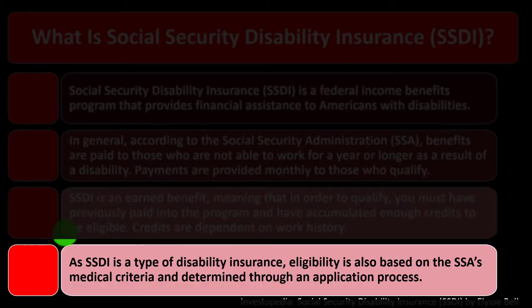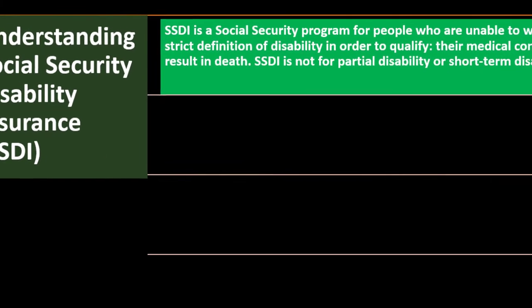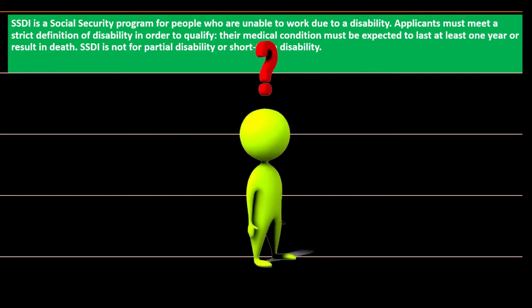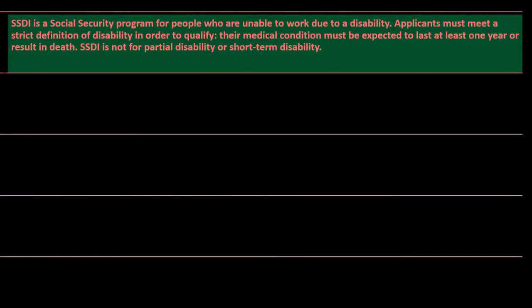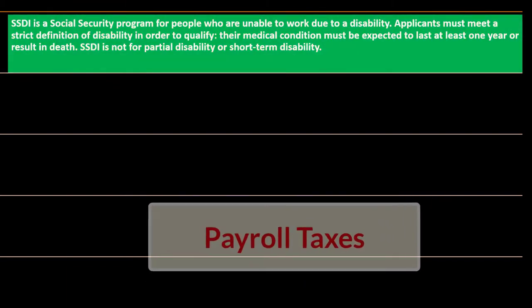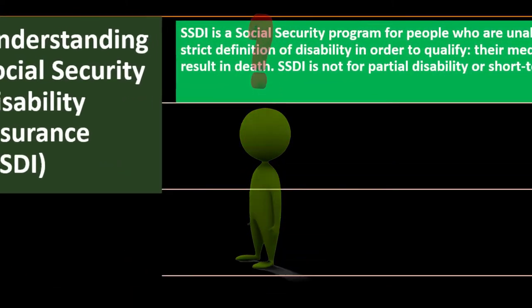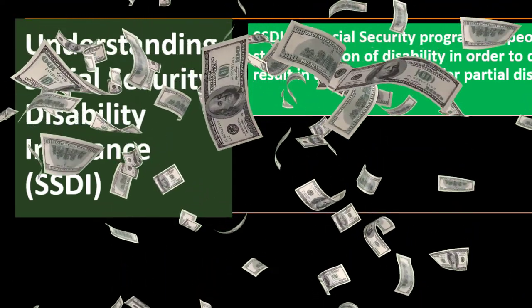SSDI is a Social Security program for people unable to work due to disability. The Social Security system works on two ends: you pay into it through wages taken from your paycheck — payroll taxes for Social Security, Medicare — or if self-employed, through self-employment tax. Traditionally we think of receiving benefits at retirement, but with SSDI you may receive benefits before retirement if you become disabled.